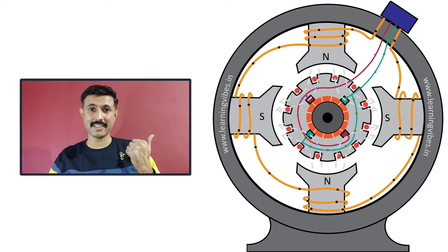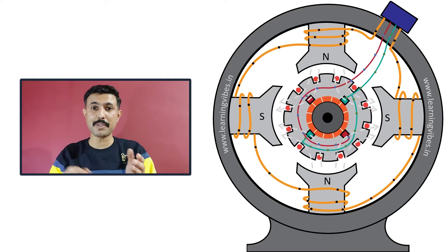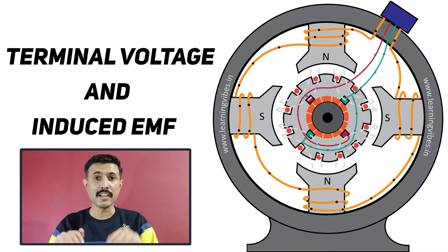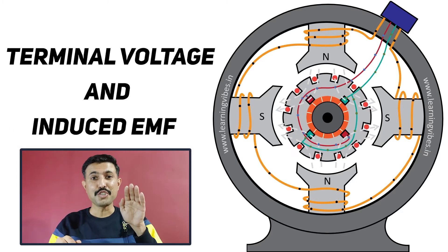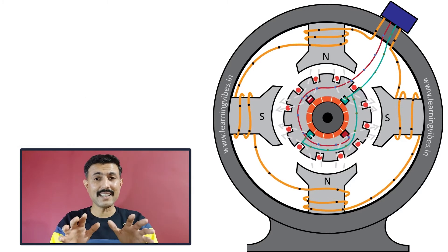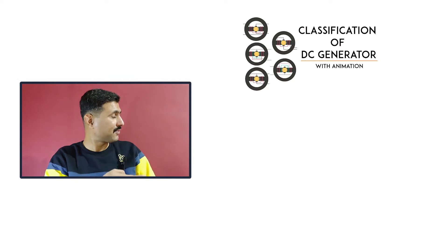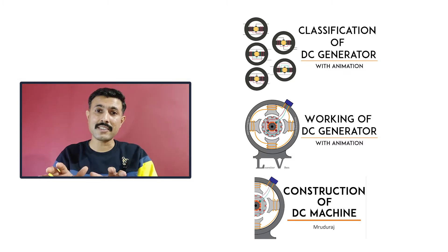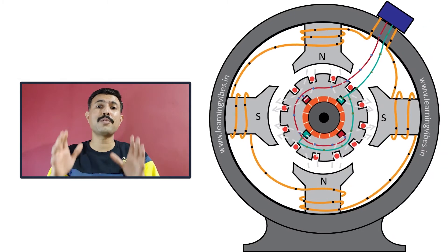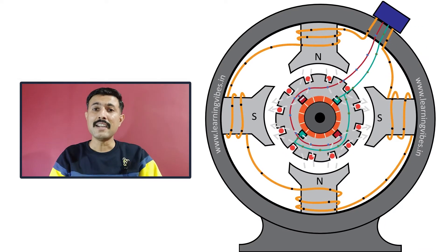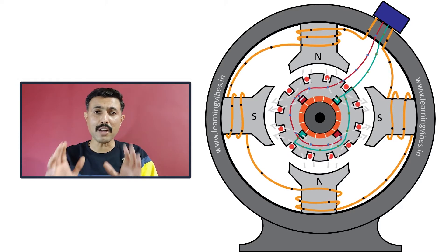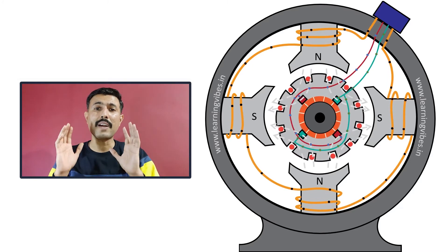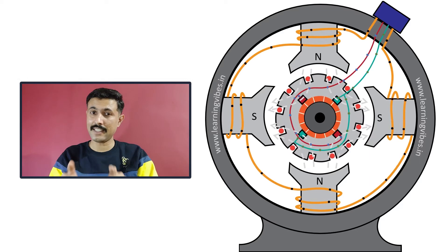This is a DC generator video where we are going to get the relation between terminal voltage and induced EMF in a short shunt DC generator. There are various types of DC generators — videos on classification, working, and construction with animations are available. In this video, we are going to get the equation. This approach will be very helpful when solving numericals on DC generators. Without further delay, let's begin the session.